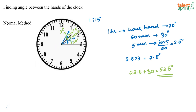This is how you calculate the angle between the hands of the clock at any given time. We first find the angle traveled by the hour hand from 1 o'clock to 1:15, then find the remaining angle the hour hand has to cover to reach 2, and add the angle between 2 and 3. However, this method is time-consuming, so there is a shortcut formula which is especially useful in examinations.